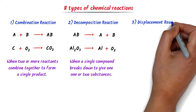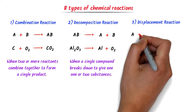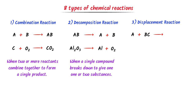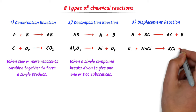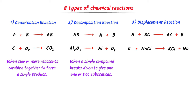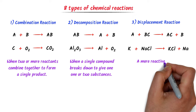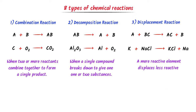The third type is displacement reaction — A plus BC react to form AC plus B, where A displaces B. For example, potassium plus sodium chloride react to form potassium chloride plus sodium — potassium displaces sodium. We define it as: a reaction in which a more reactive element displaces a less reactive element from its compound.